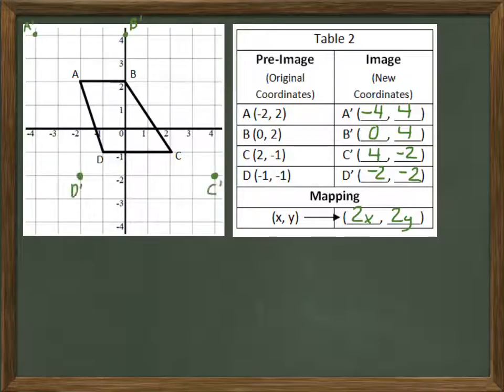There's a, b, c, and d prime right there. Let's go ahead and connect them. So what has happened to that figure? Well, obviously, it's gotten bigger.